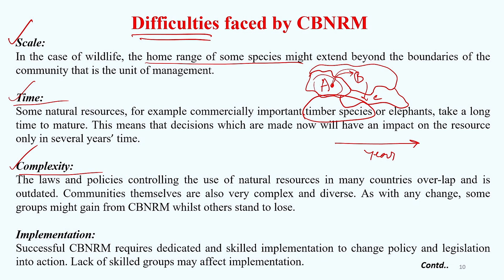Complexity is another difficulty. The laws and policies which control the use of natural resources in many countries often overlap and are outdated. Communities themselves are also very complex — they are diverse in culture, food habits, and the way they manage crops and livestock. As with any kind of change, some groups might get more benefit from CBNRM while others get less, so managers and administrators must understand this complexity and take appropriate steps to avoid negative dynamics among different communities.